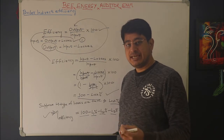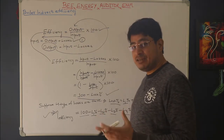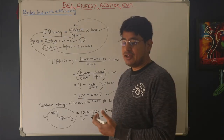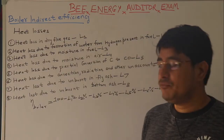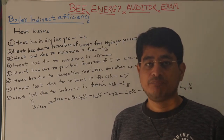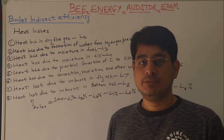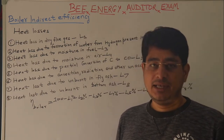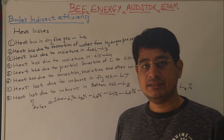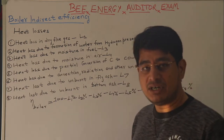For calculation of boiler efficiency using the indirect method, we first need to know what the various losses are that occur in a boiler. We calculate the percentage for each loss, then use the efficiency definition expressed in terms of losses to arrive at the boiler indirect efficiency.